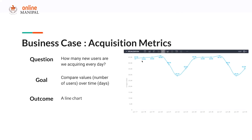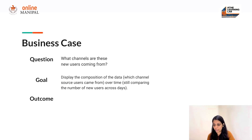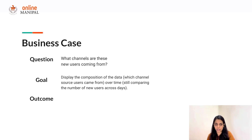The line chart effectively demonstrates the trend in the number of users we're acquiring every day. There is an expected dip observed on weekends, and a line chart serves the exact purpose of presenting this information. Let's deep dive and see where these users are coming from. The question is: what channels are these new users coming from? The goal is to display the composition of data — which channel or source users are coming from over time.